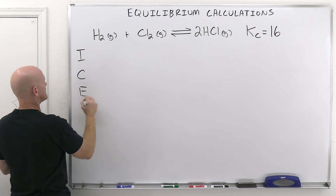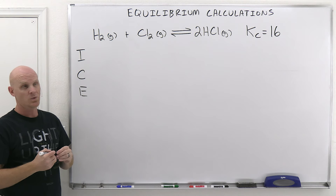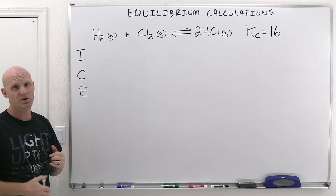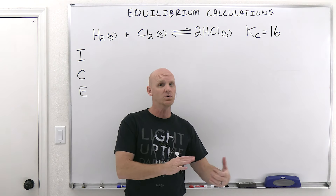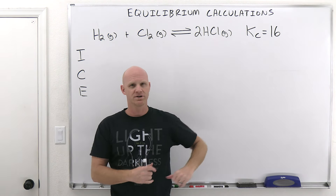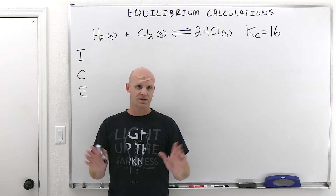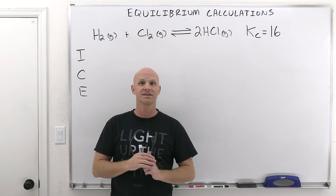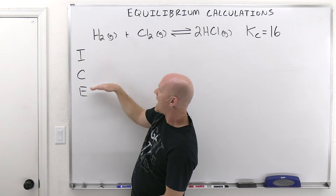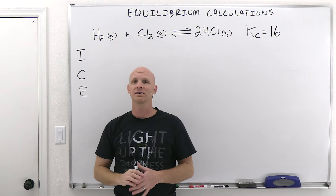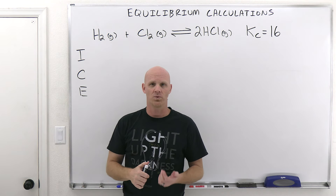The ICE table stands for Initial concentration, the Change in concentration, and then the Equilibrium concentration, which is just the initial plus the change. You're going to know you're doing one of these ICE table problems if you're dealing with both initial and equilibrium conditions. In the last problem, we were only dealing with all concentrations at equilibrium — no initial conditions, just calculate the equilibrium constant. That is not an ICE table problem. When you've got both initial and equilibrium conditions in the same problem, that's typically when you're going to be using this tool — the ICE table or ICE chart.